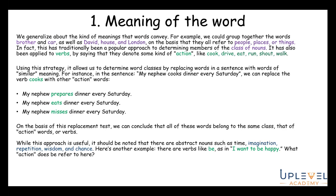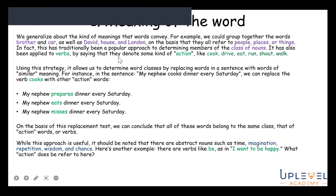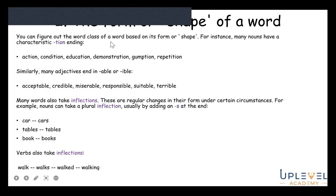However, this strategy has limitations. Abstract nouns like time, imagination, and repetition can be confused with verbs, and verbs like 'be' — as in 'I want to be happy' — don't refer to an action but a state. So relying solely on meaning can cause errors. Knowing these limitations means you should also use the other strategies to confirm your answer.